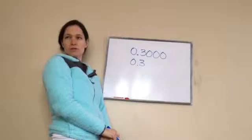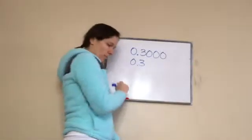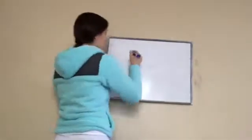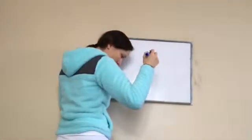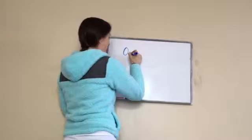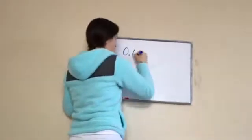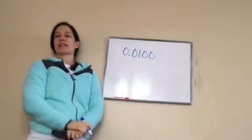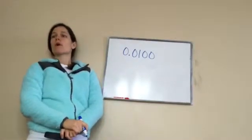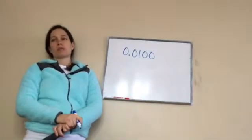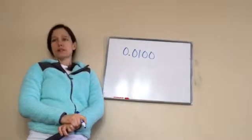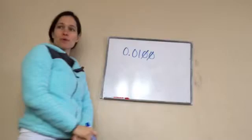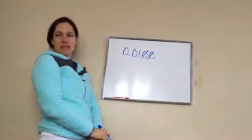So what I want you to see is if I were to take this number and I told you to simplify the answer, what would the real final answer be? 0.01. So these are called ending zeros, and you don't need them.